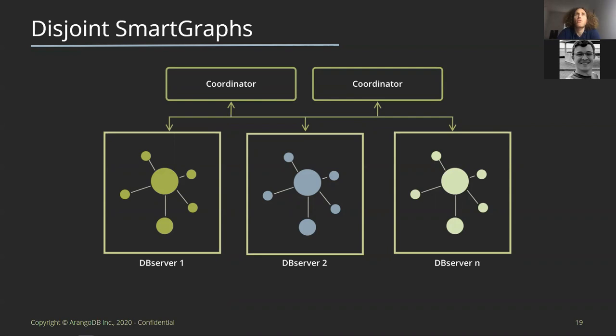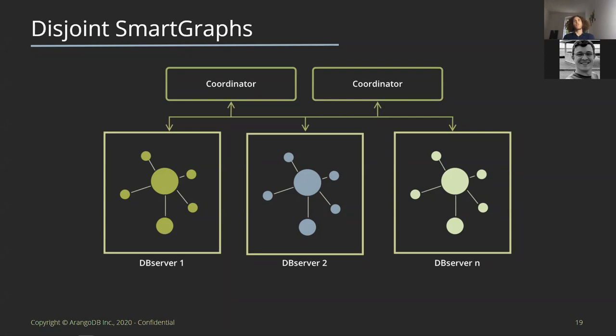With disjoint smart graphs we go one step further: if we know we have disjoint sub-partitions with no edges between them, we can push all query processing down to the DB servers. If we're looking for a node neighboring another, we push that to all DB servers in parallel and the coordinator just accumulates results — no hops between nodes because we can answer the query locally on each subpartition.